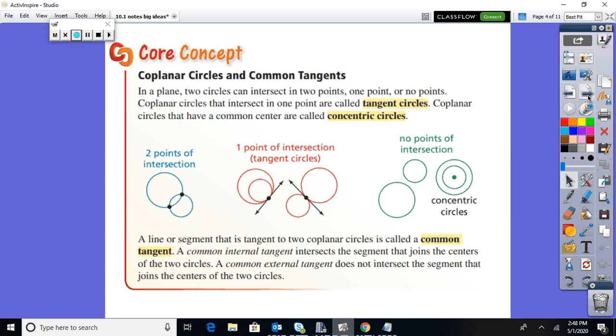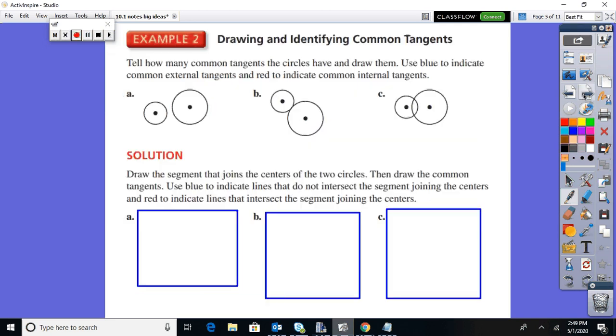More vocab: coplanar circles and common tangents. In a plane, two circles can intersect in two points, one point, or no points. You see the pictures here. Here's two points of intersection, one point of intersection, no points of intersection. And if they have the same center, they're called concentric circles. A line or segment that is tangent to two coplanar circles is called a common tangent. A common internal tangent intersects the segment that joins the centers of two circles, and a common external does not intersect the segment. And here's what we mean by that.